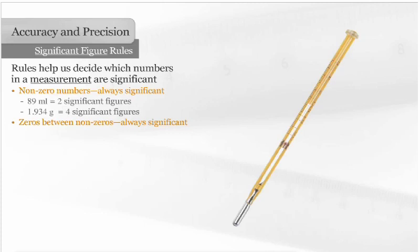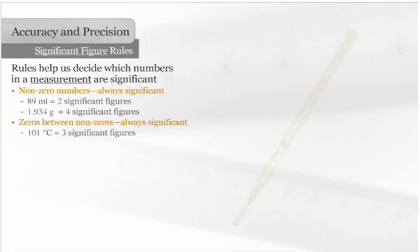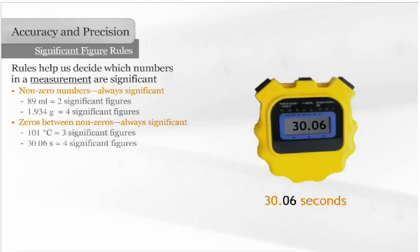Zeros between non-zeros are always significant. 101 degrees Celsius has three significant figures. 30.06 seconds has four significant figures.